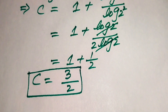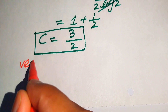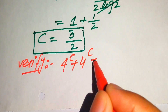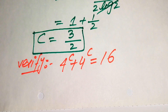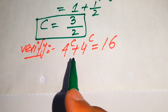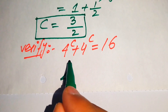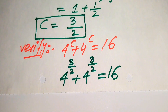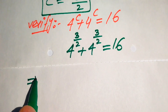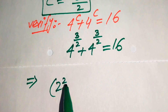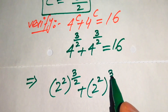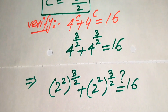This is our final answer, but we need to verify that c equals 3 over 2 satisfies the original equation. We copy down the original statement: 4 to the power of c plus 4 to the power of c equals 16, and substitute c equals 3 over 2. This gives us 4 to the power of 3 over 2 plus 4 to the power of 3 over 2. We rewrite the base 4 as 2 squared, so each term becomes 2 squared to the power of 3 over 2, and we check whether this equals 16.